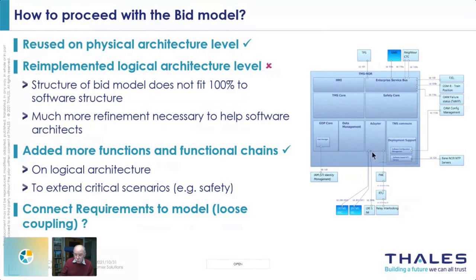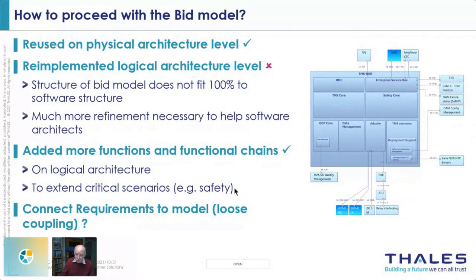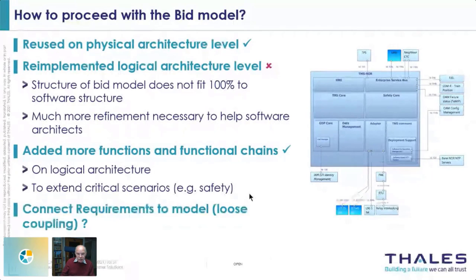The second aspect we reused from the bid model was functions and functional chains, used on the logical architecture level already in the bid, but extended significantly here. We focused mainly on critical scenarios. For safety, we tried to describe safety-critical processes in the system, the handling of alarms and diagnostic messages, and we used the logical architecture level to create interface specifications. We used logical architecture diagrams, extended by sequence diagrams when necessary, particularly to describe specific failure cases.